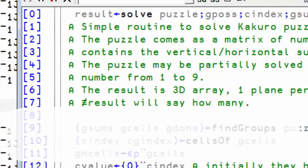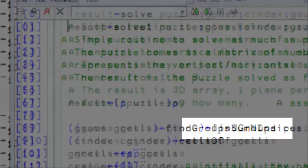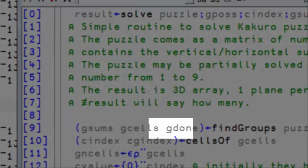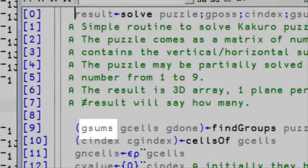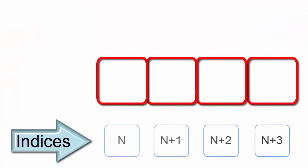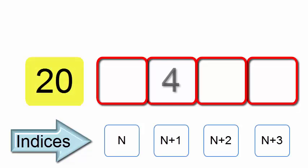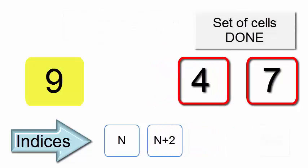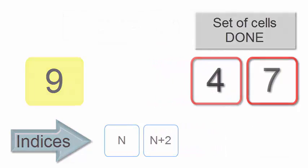This program is very similar to the find groups and indices program we had before. The difference is that I gather not only the indices, but the contents, and adjust the sums by removing the sum of unused elements in each group. For example, if a group of four cells had a sum of 20, and two of the cells were 4 and 7, then the sum would be adjusted to 20 minus 4 plus 7 equals 9. And the indices of these two cells removed from the set.